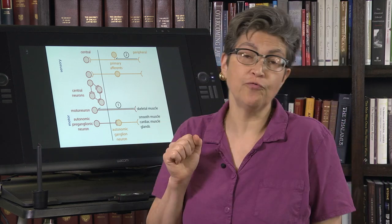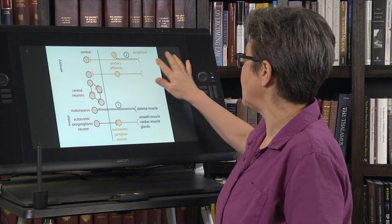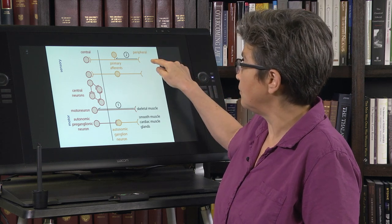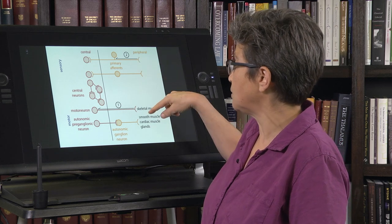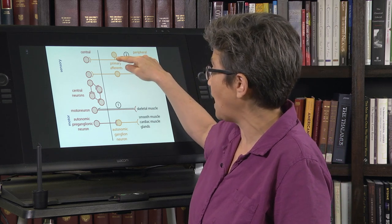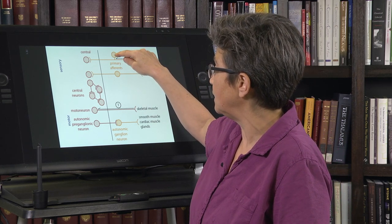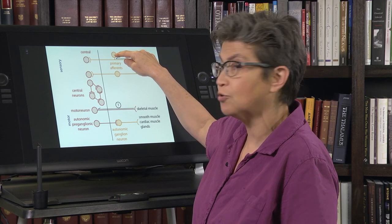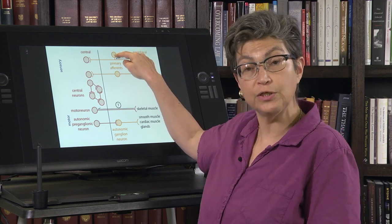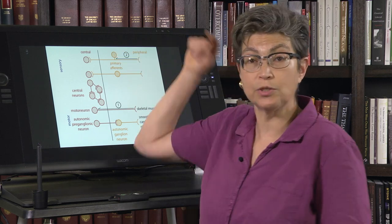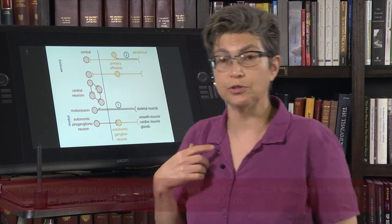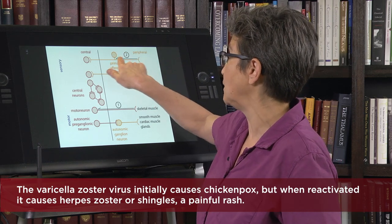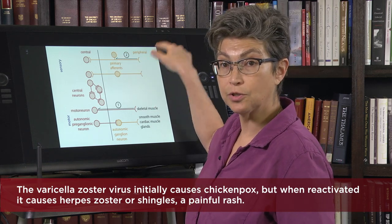Another type of neurotrophic virus is a herpesvirus. In this situation, the virus prefers sensory neurons over motor neurons. It goes back, reaches this primary sensory neuron, and it lives there, hopefully dormantly. But every once in a while, particularly during periods of stress, it may decide to re-erupt and go back out to the periphery.